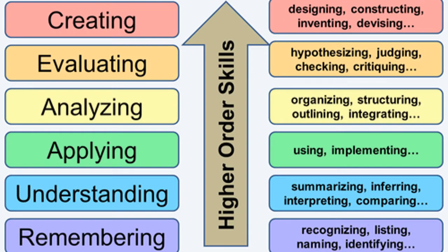Bloom's Taxonomy is important because as you move from the bottom up, each level increases in higher-order skills, as you can see on this chart. Remembering is just memorization with little thinking. Remembering, Understanding, and Applying are low-level thinking questions — not asking students to do much thinking, just take what they're told and put it into play. Analyzing, Evaluating, and Creating are higher-order thinking, where students critically think, problem-solve, and create their own solutions.